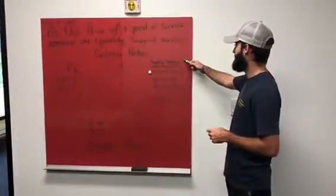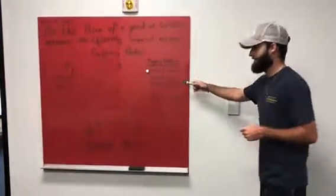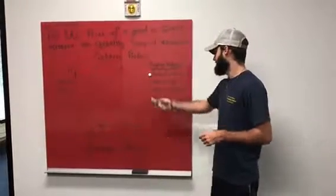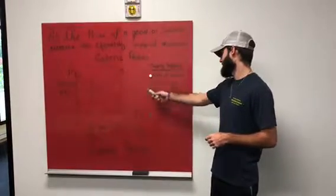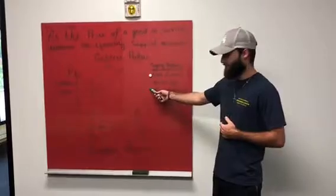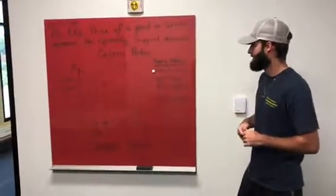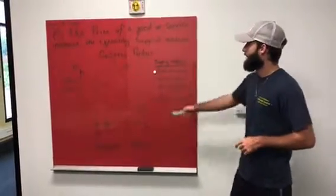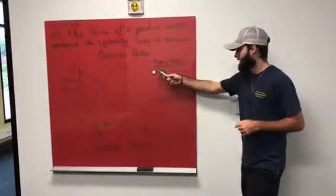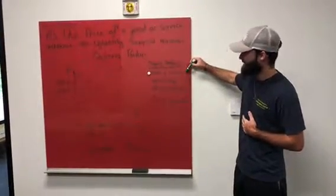With the law of supply come many supply shifters, and here we have listed a few: one, state of nature; two, technology; three, number of suppliers; and four, price of resources. Over here we have an example of the one we will be singling out today, which is state of nature.